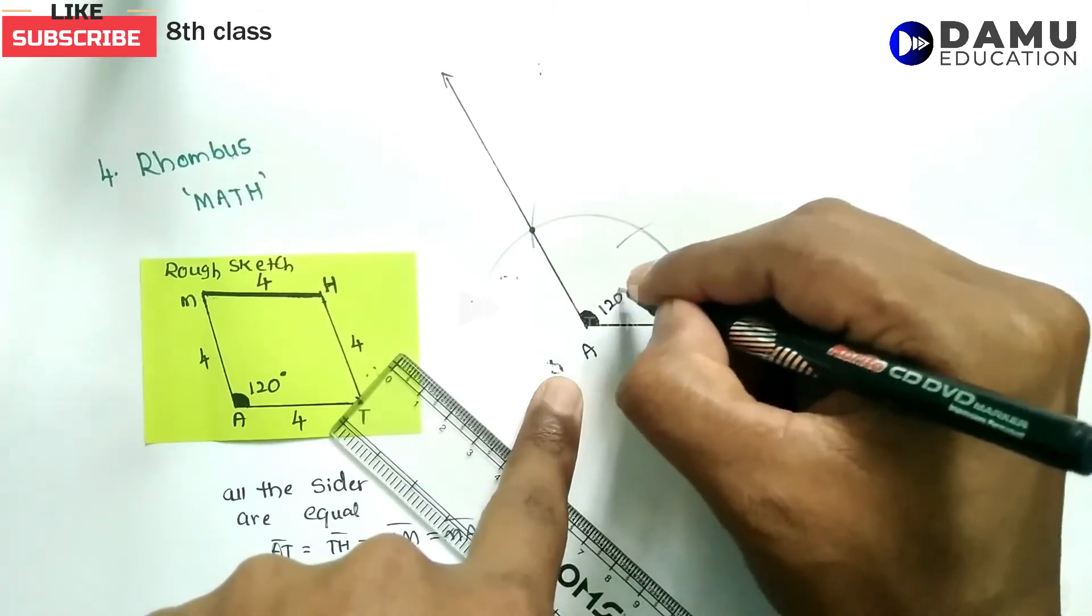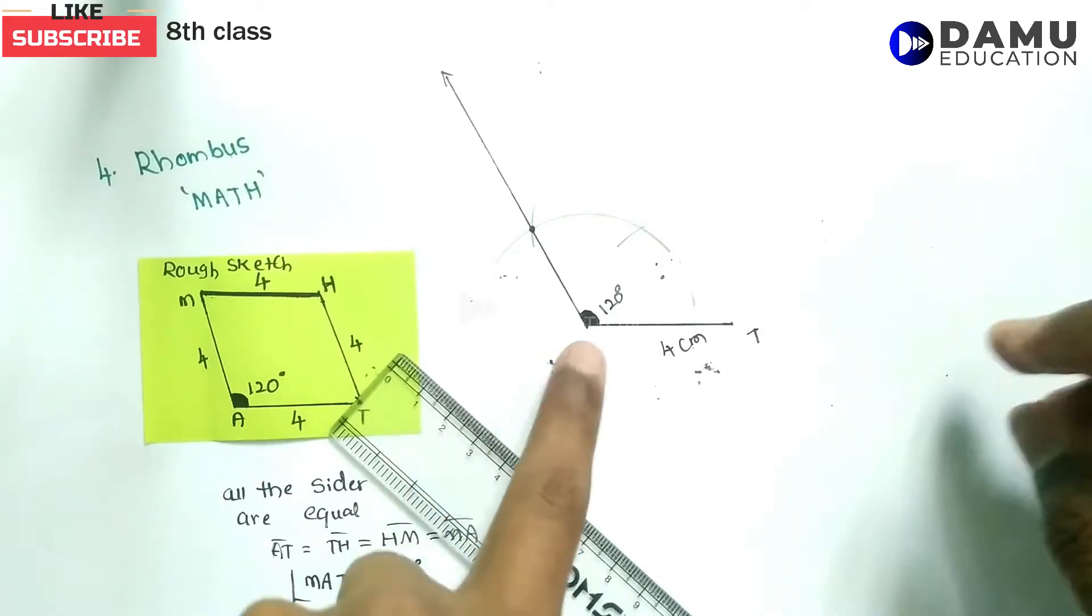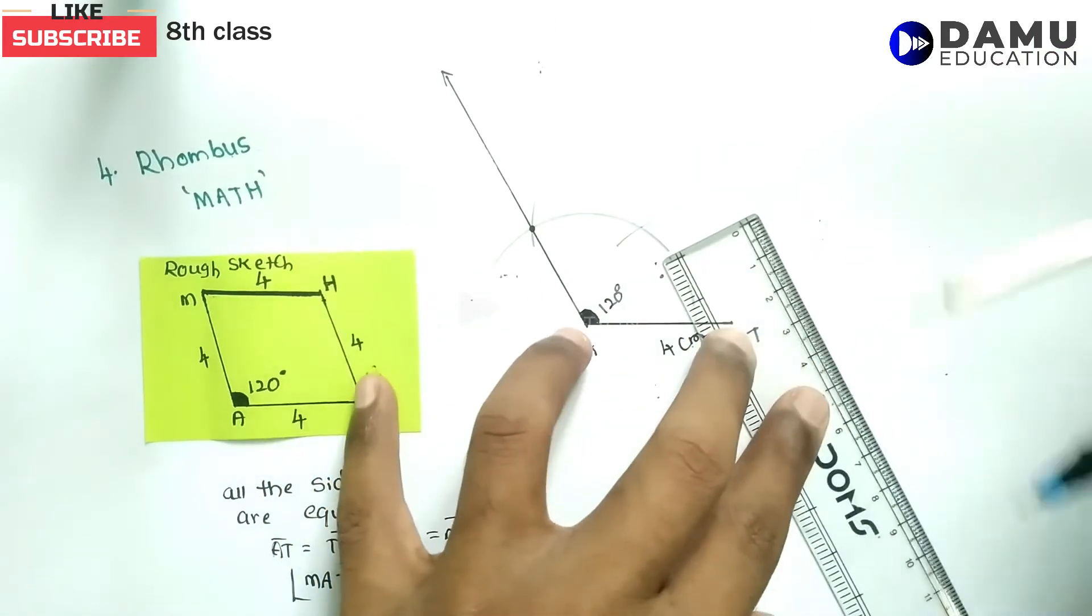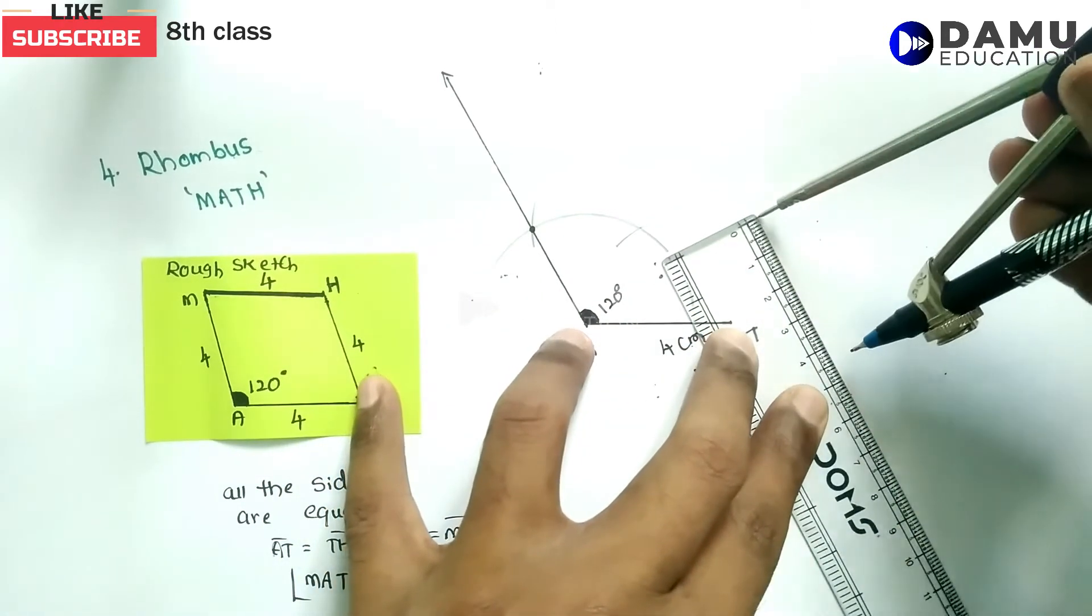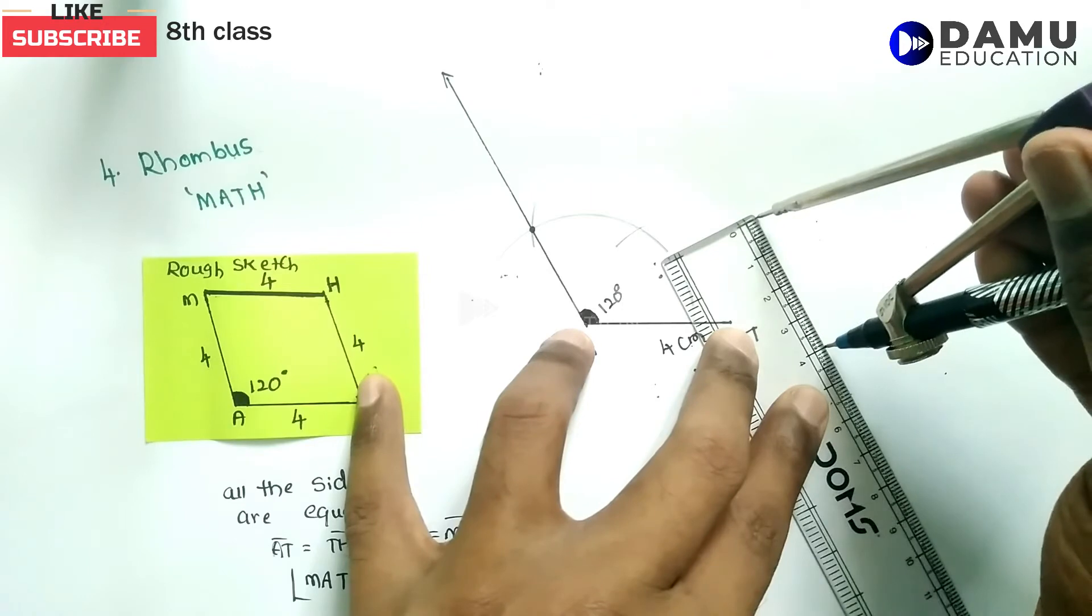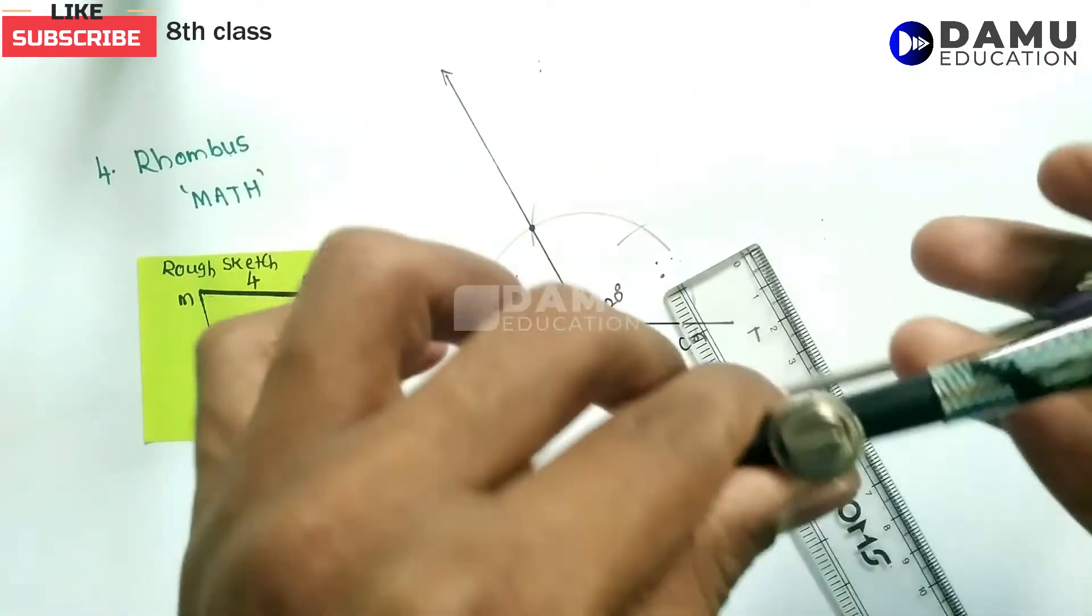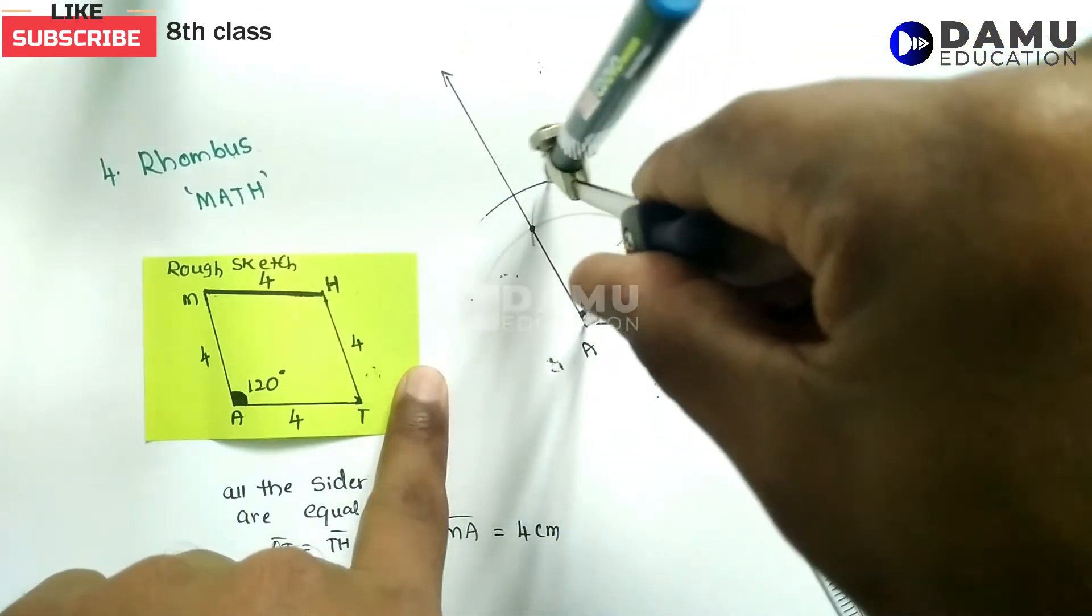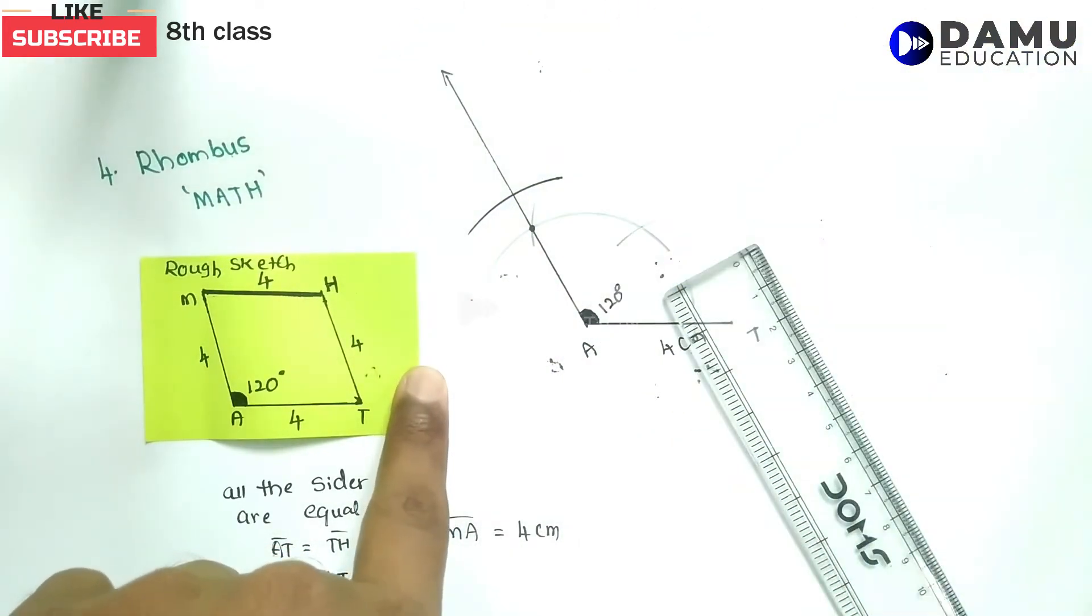Next, from A we need to draw an arc with 4 cm radius. Take your scale and measure 4 cm length. With A as center, draw one arc with 4 cm radius.